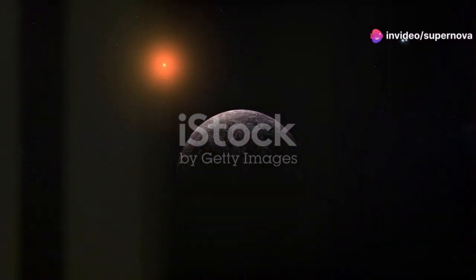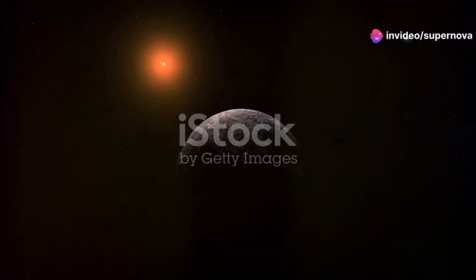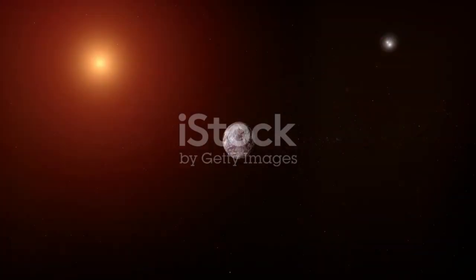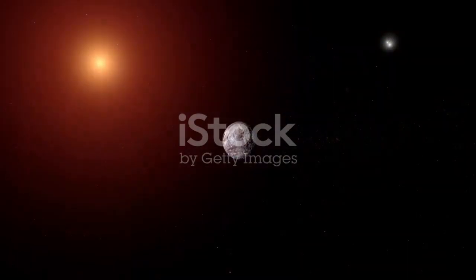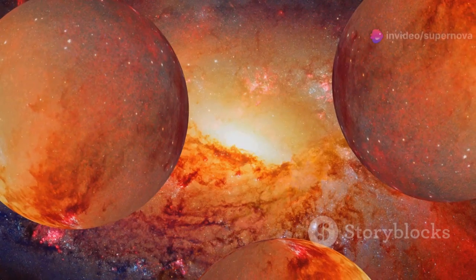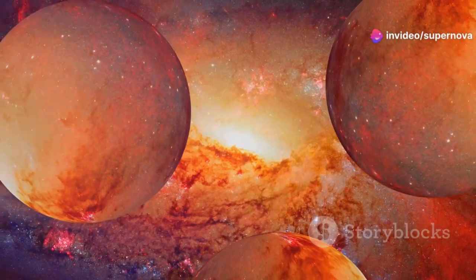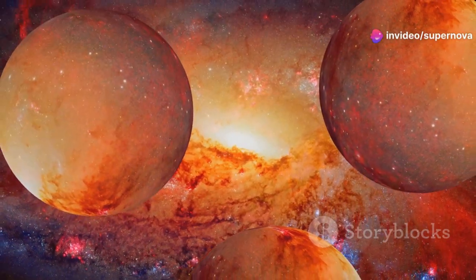In this great expanse our closest star system neighbors are the three stars of Alpha Centauri, a fascinating and complex system. Alpha Centauri is a triple star system, meaning it has three stars that are gravitationally bound and orbit each other in a delicate dance, creating a dynamic and intriguing celestial ballet.